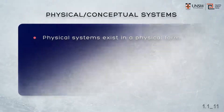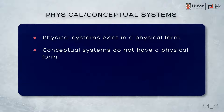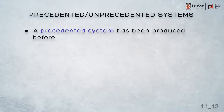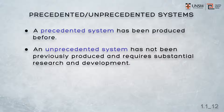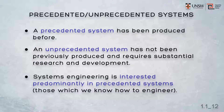Physical systems exist in a physical form. Conceptual systems do not — they're conceptual. Since our focus in systems engineering is on engineering a system, things we can actually produce, we're interested in physical systems. In a precedented system, similar such systems, or at least the majority of system elements, have been produced before. An unprecedented system is one that's not been previously produced. Systems that comprise mostly unprecedented elements are the result of research and development. Here, we're focusing on systems that comprise largely precedented elements — those that we have engineered before, and therefore those to which systems engineering is most appropriate.